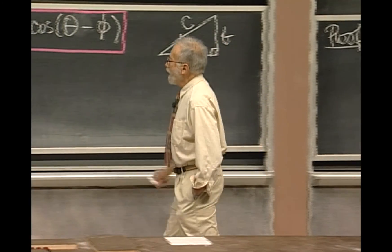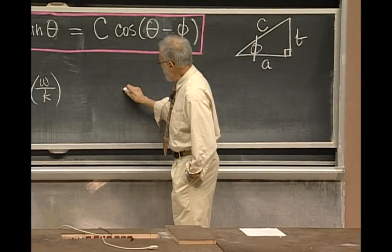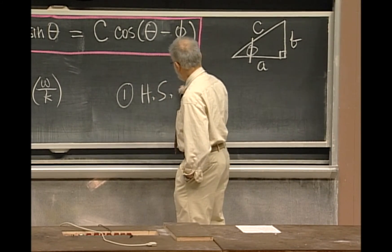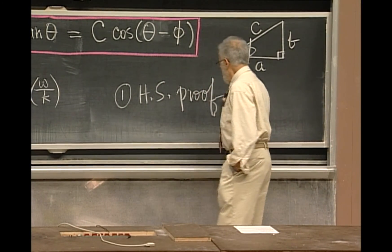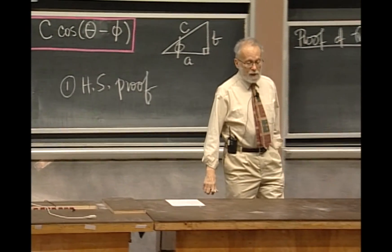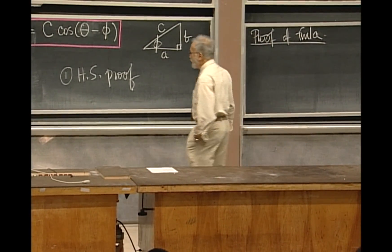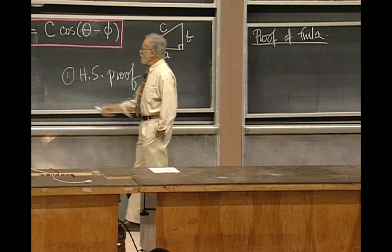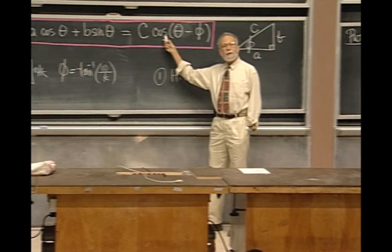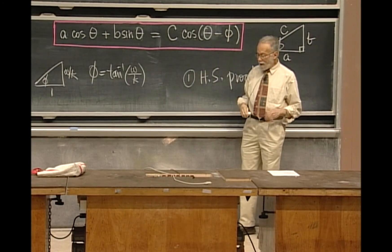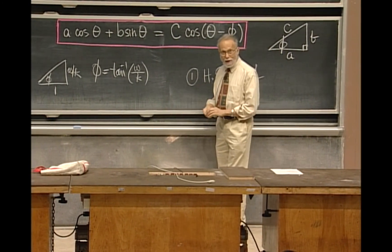There are three basic proofs. There is the one I will not give you. I'll call the high school proof, which is the only one one normally finds in books, physics textbooks or other textbooks. The high school proof takes the right-hand side, applies the formula for the cosine of the difference of two angles, which it assumes you had in trigonometry.